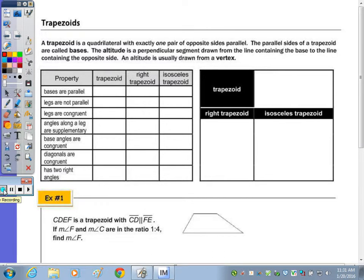At the top of the page, if you read along with me, it says that a trapezoid is a quadrilateral, so it's four sides with exactly one pair of opposite sides parallel, one and only one. The parallel sides of a trapezoid are called bases. The altitude is a perpendicular segment drawn from the line containing one base to the opposite side, but it's usually drawn from the vertex. So I want you to think about or try to recall the area formula of a trapezoid given the bases and the height.